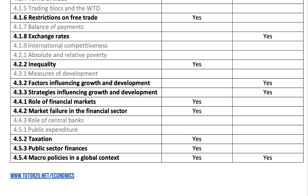Macro policies in a global context — the last part of the course — including things like tax avoidance and economic shocks, are in for both paper two and paper three.